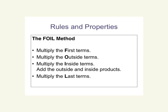Now for the grand finale: the FOIL method — the most popular method. FOIL stands for First, Outside, Inside, Last. You multiply the first terms, then the outside terms, then the inside terms, then the last terms. Keep in mind that the outside and inside terms will be like terms that you can combine after doing O and I.